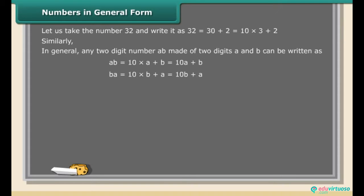The reverse two-digit number BA = 10B + A. Let us take the three-digit number 423.